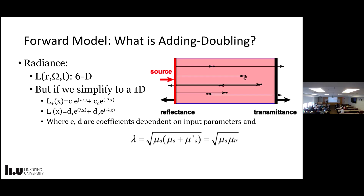Adding-doubling starts off with: can we set up a measurement geometry where it can be reduced to just a single dimension? Here we have the idea of a slab of optical material with infinite lateral extent — it's homogeneous. We can do a lot of simplifications in the lateral information if it's homogeneous, and simplify the angular component by saying if things are just going forward and backwards. Assuming a constant material reduces the temporal aspects as well. The big takeaway is that in doing that, you get simple direct solutions — with radiance in the forward direction and radiance in the backward direction.